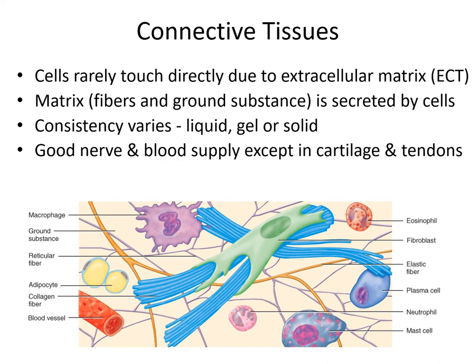Throughout most of your body, cells are not in direct contact with each other. We've talked about some exceptions — gap junctions, tight junctions, and desmosomes. But quite frequently we just have a thick layer of extracellular matrix that glues cells together. That extracellular matrix consists of a ground substance made up of glycoproteins and proteoglycans. This gel-like substance also contains cables and ropes — collagen, elastic fibers, and other proteinaceous fibers — that help maintain structure.